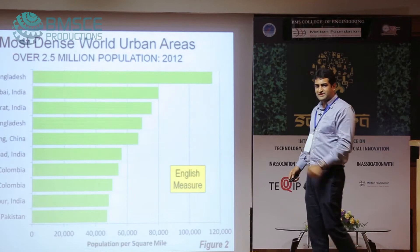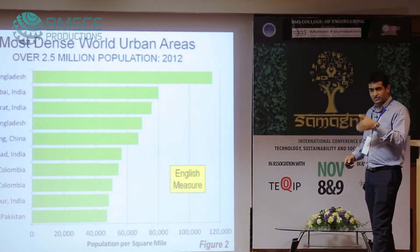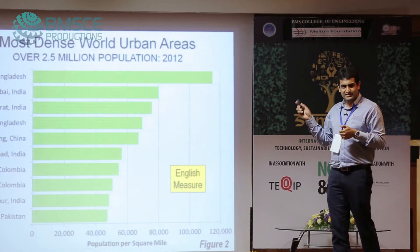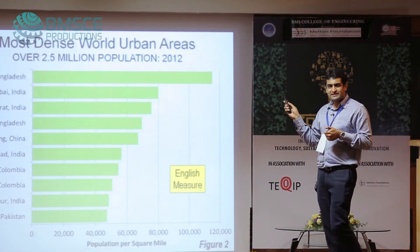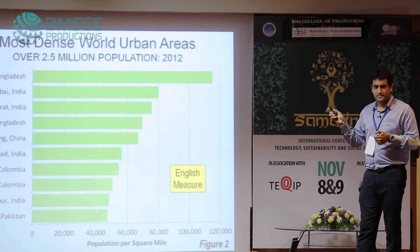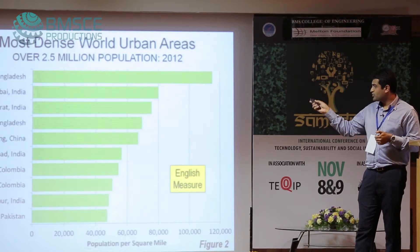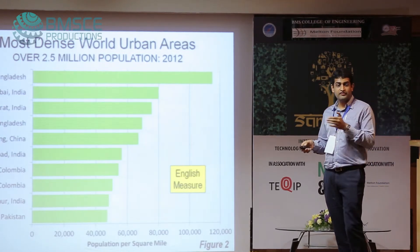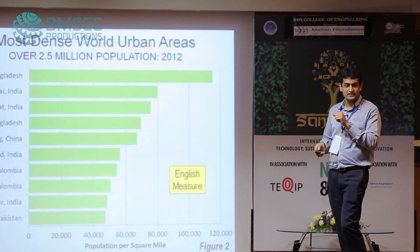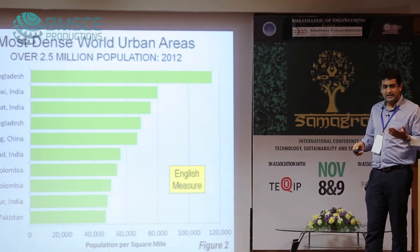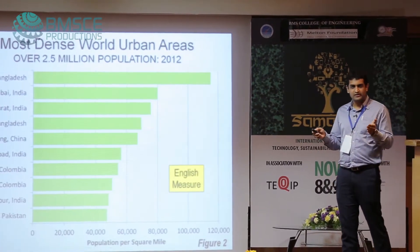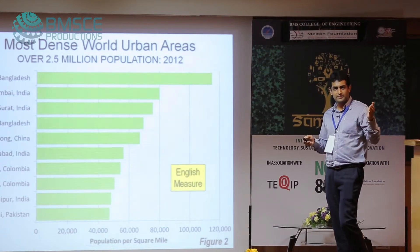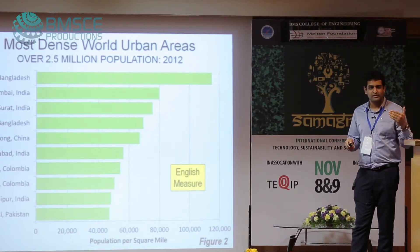That imbalance calls for sustainable development to happen. The most dense cities in the world — almost 80 percent of them lie in Asia, and out of those, 50 percent are Indian cities. So 80 percent of this development is happening in this part of the world, because the other 20 percent is already developed to a certain level.